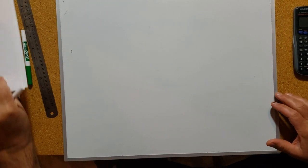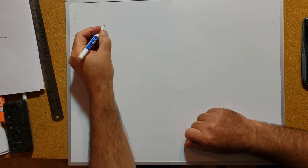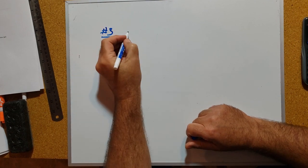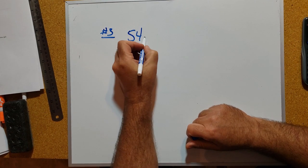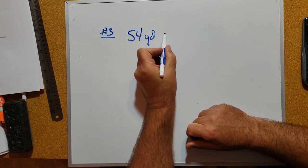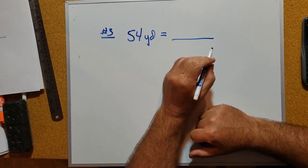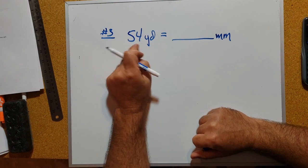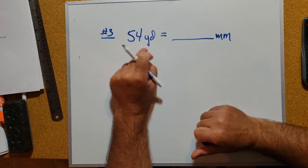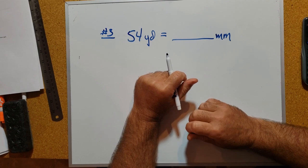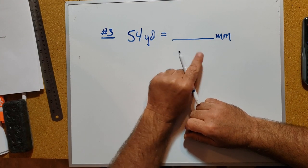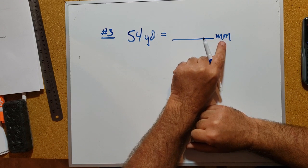Alright class, let's take a look at question number three. We're asked to determine how many millimeters is 54 yards. I think 54 yards is still more than half the size of a football field - quite a distance. You want to know how many millimeters is that.